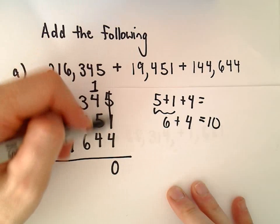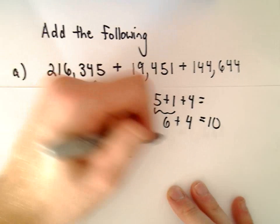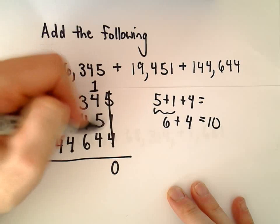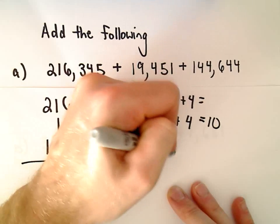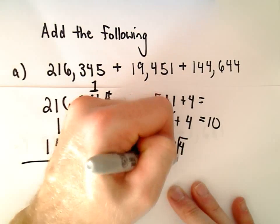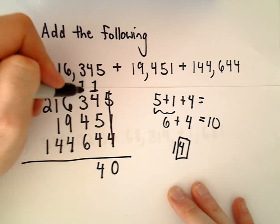Okay, so now we've taken care of that column. Then I'm going to do 1 plus 4, which is 5, 5 plus another 5 is going to be 10, 10 plus 4 is going to be 14. So again I'm going to drop down the 4, carry yet another 1 to the next column.